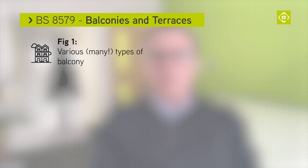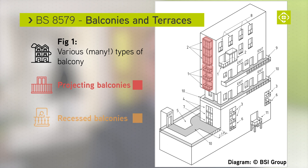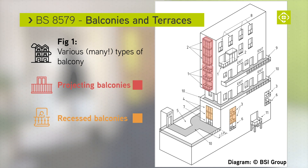To start, let's consider some general principles. Balconies exist as an amenity space for building users. Figure 1 and its associated key explain the various types of balcony, but these broadly fall into two categories: projecting balconies or recess balconies, and both of these can either be open or closed to the elements. This diagram and key provide vital definitions for the rest of this British standard.